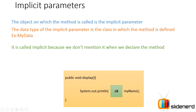If you look at the previous slide, the data type of d1 was MyData — that is exactly the data type of our implicit parameter. When you declare the method 'public void display()', you don't have to mention d1 anywhere inside the parentheses, and that is why it is called implicit. Hopefully you now understand what implicit parameters are and how they work.